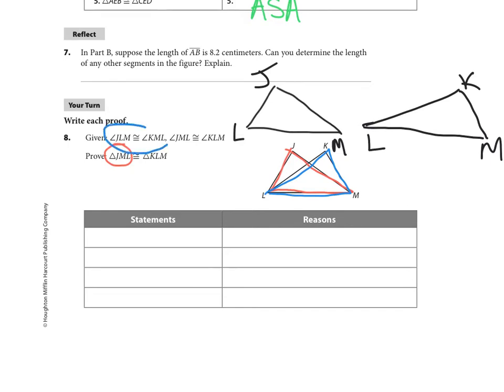All right, so once I have those drawn out, this says that angle JML, which is this angle, is congruent to KML, which is that. And I would write that down here as given. Then it says that JML is congruent to KLM, which is that angle there. And I would write it down here as given.